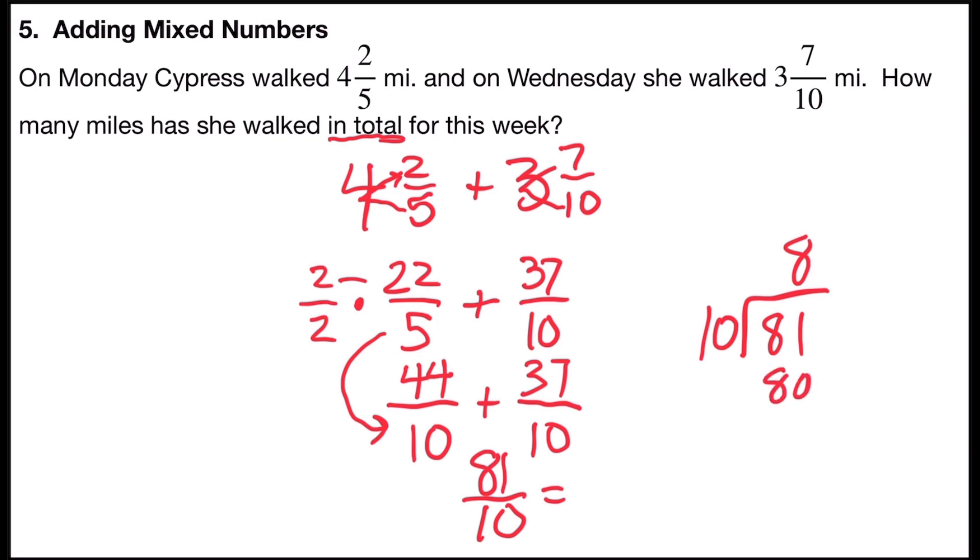Eight times ten is eighty, and when I subtract, I find I have a remainder of one out of ten. So eighty-one-tenths, ten divides into eighty-one eight full times, and I have a remainder of one out of ten.